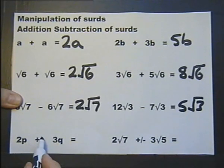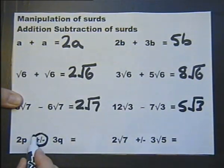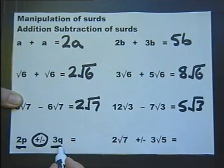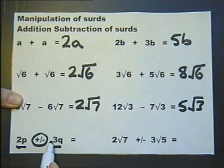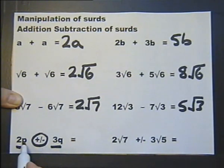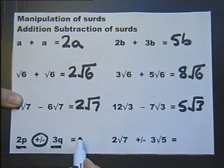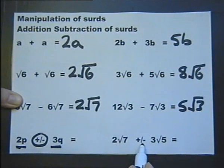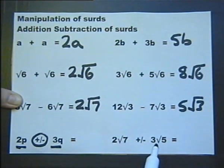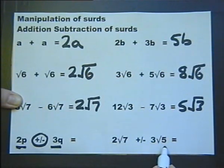But, as with ordinary algebra, you can't add or subtract if the terms are not like terms. So 2p plus 3q would just be 2p plus 3q, and the same applies to surds: 2√7 plus 3√5 would just remain 2√7 plus 3√5. Although later we might find that some of these can be simplified, even if we're not strictly adding or subtracting.